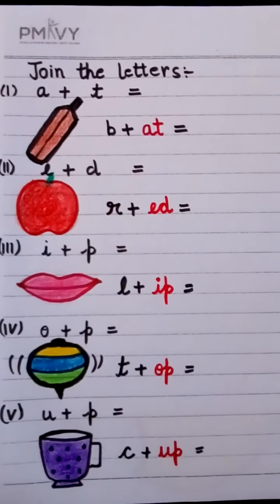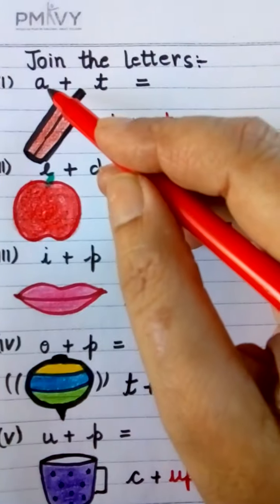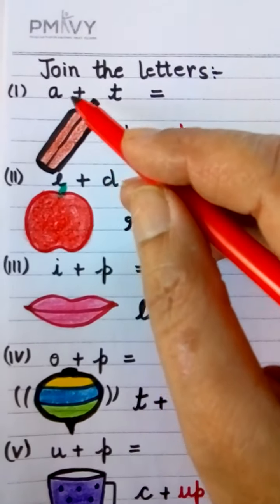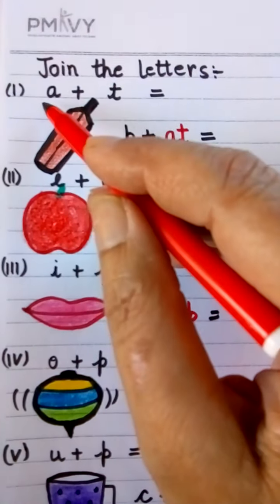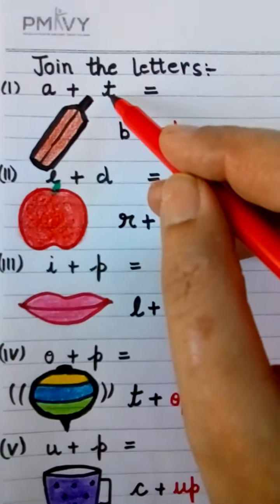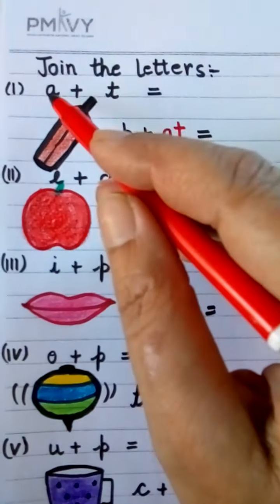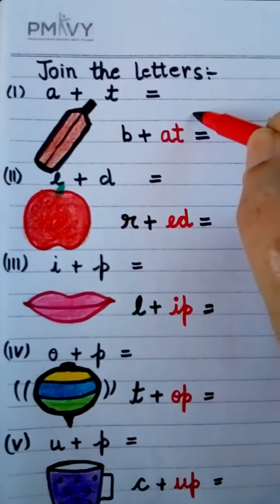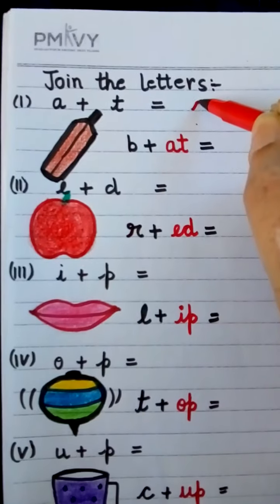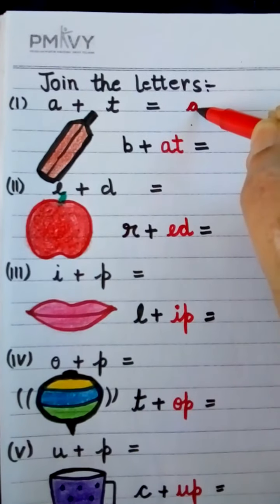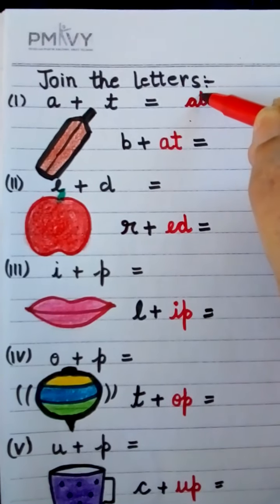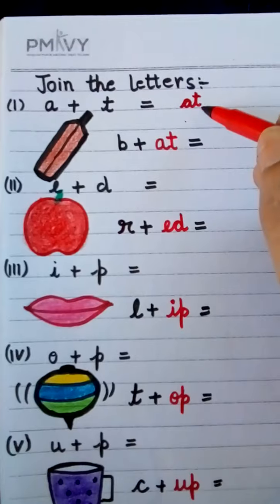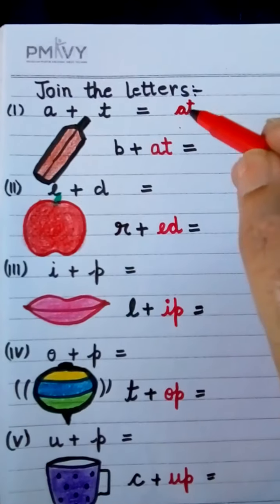Now we will join the letters. This is the letter A and this is the letter T. A-T. We will write A-T.